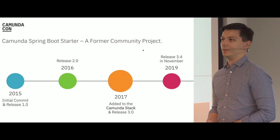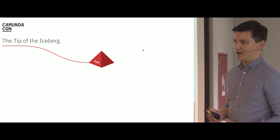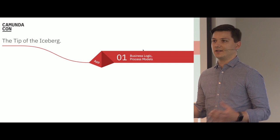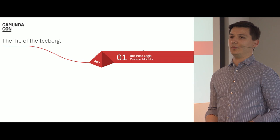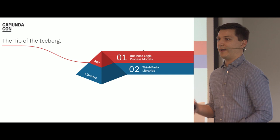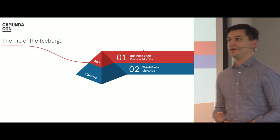Before we start the workshop I'd like to explain what a JAR actually is. Let's pretend we want to build a process application. It contains all the code we write in our IDE — for example a back-end in Java and a front-end in JavaScript — and also the process model we built with the Camunda Modeler. Since we don't want to reinvent the wheel, we want to use third-party libraries; for example, to handle JSON in the back-end we use a JSON object mapper added as a dependency.